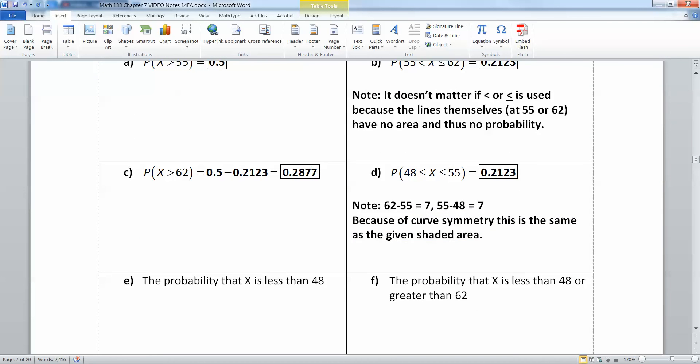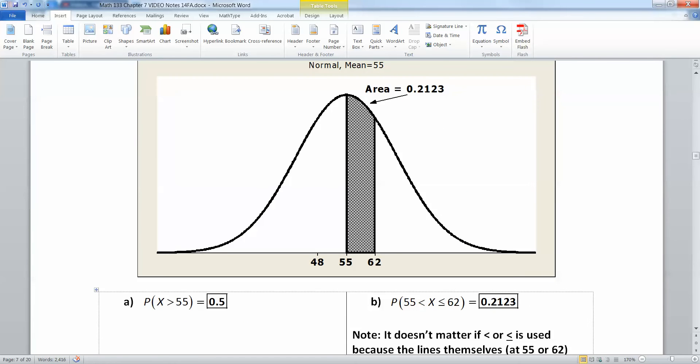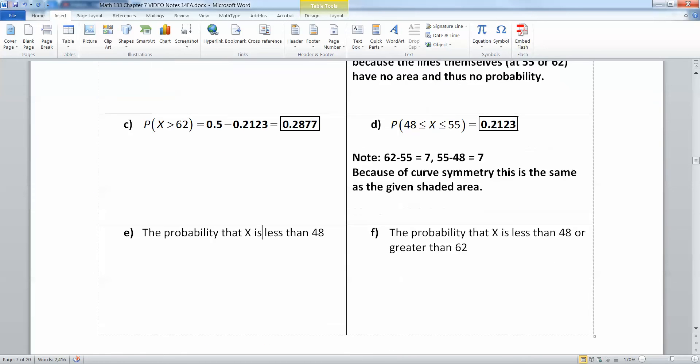Now what about less than 48? Well we just figured out that between 48 and 55 is 0.2123 over here on the left. So less than that would be identical to this area we found over on the right, that would be 0.5 take away 0.2123, and it'd be the same area we already found, 0.2877.